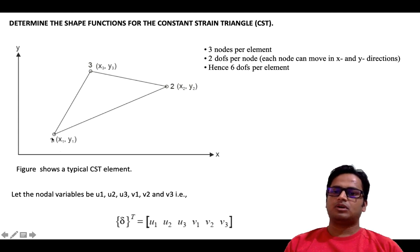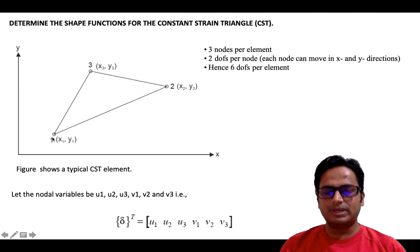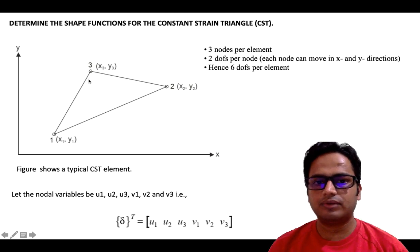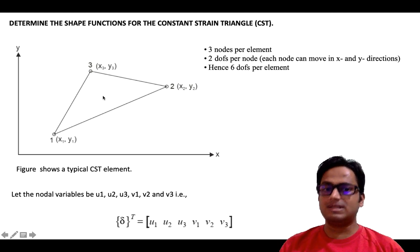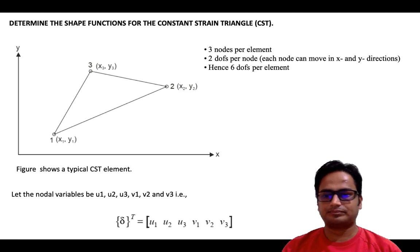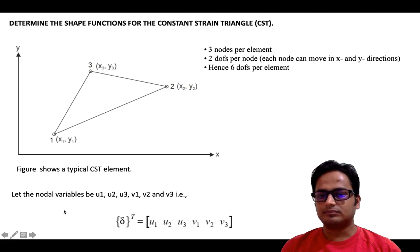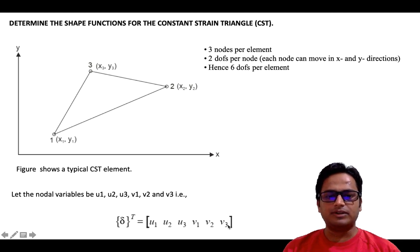At one node we have two degrees of freedom, and we have a total of three nodes, so for this element we have six degrees of freedom. The displacement vector is represented by U1, U2, U3, V1, V2, and V3.